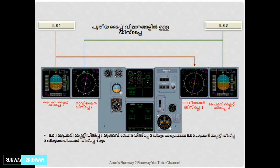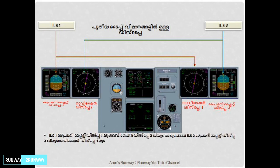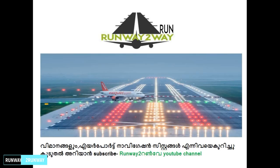Here we will select the aircraft and localizer signal beam. The ILS Indicator has a primary display and navigation display. One is a pilot or cockpit display. For example, the signals are available in ILS, and the aircraft will land on the plane.